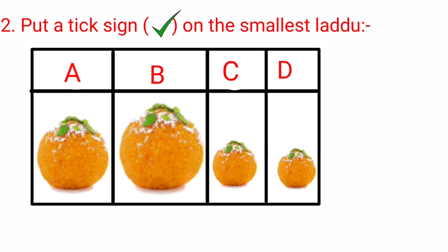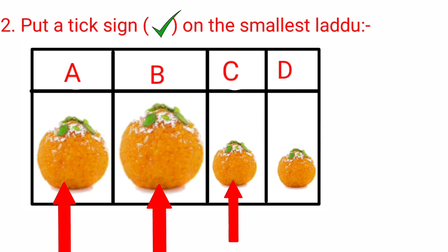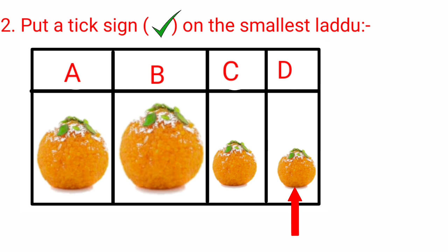On observing, we found that ladu B is the largest, ladu A is smaller than B, ladu C is smaller than A and B, and ladu D is the smallest. So the correct answer is option D — let's put a tick on it.